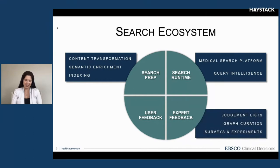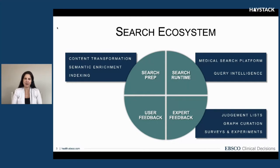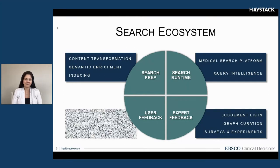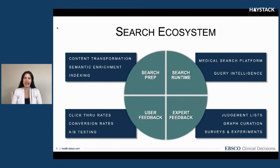Our expert feedback area is really where we engage with our subject matter experts. We work with them to create judgment lists, otherwise known as golden sets, which represent the target we strive for when tuning our search results. We also invite them to curate our medical knowledge graph and participate in surveys and experiments. We observe how our end users interact with their search results and incorporate that feedback back into the system.